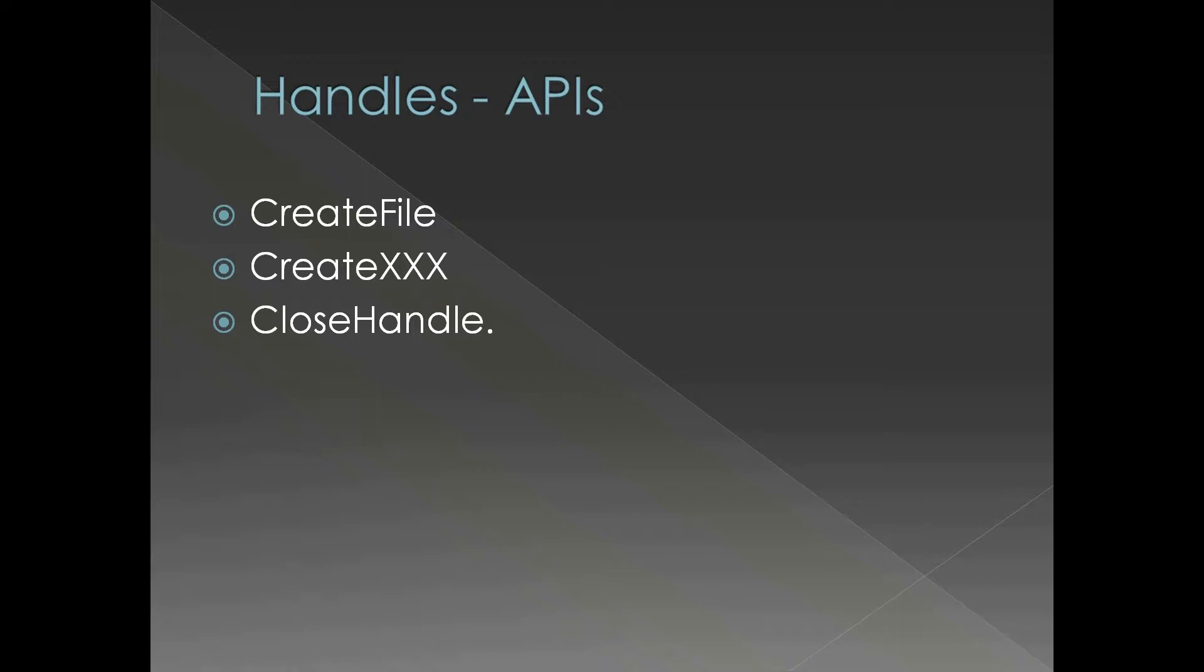We talked about fopen to get a file handle. fopen internally calls CreateFile, so CreateFile is the API which actually returns a file handle. Like that you have CreateProcess, CreateThread, CreateMutex, CreateSemaphore. Normally you pass a string to the object if it is a named object.